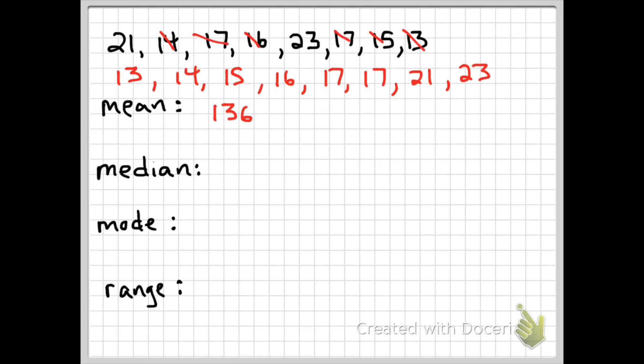Then we have to divide by the amount of numbers here. So we have one, two, three, four, five, six, seven, eight. We're going to divide by eight. After dividing by eight we can see that our average or our mean is 17. And that makes logical sense. You should not get a number that is not even in your set.